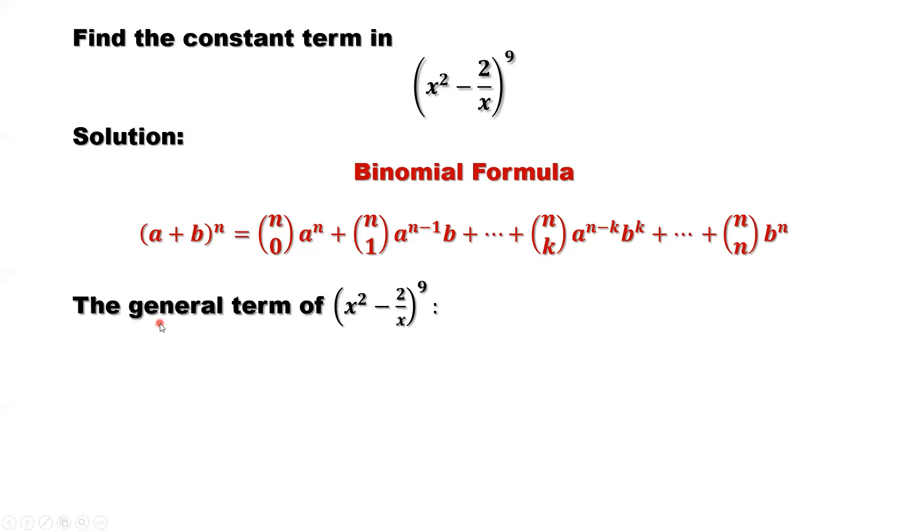We want to apply this formula to our question. How? Look at here: x squared is the a, minus 2 over x is the b.